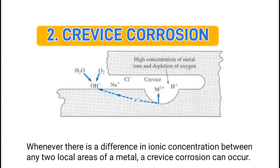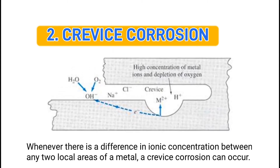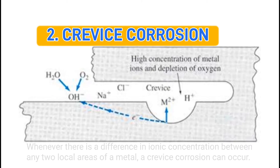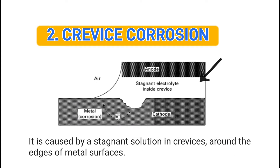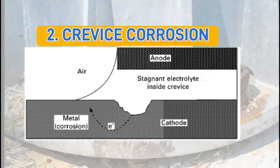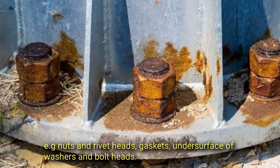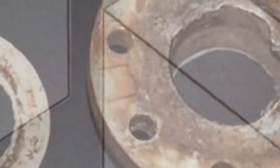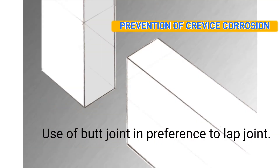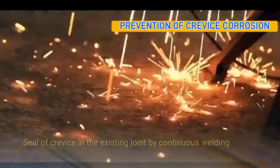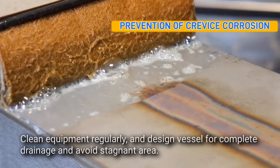Two, crevice corrosion: whenever there is a difference in ionic concentration between any two local areas of a metal, crevice corrosion can occur. It is caused by a stagnant solution in crevices around the edges of metal surfaces, for example at nuts, rivet heads, gaskets, under washers, and bolt heads. Prevention includes use of butt joints in preference to lap joints, sealing crevices by continuous welding, and cleaning equipment regularly.